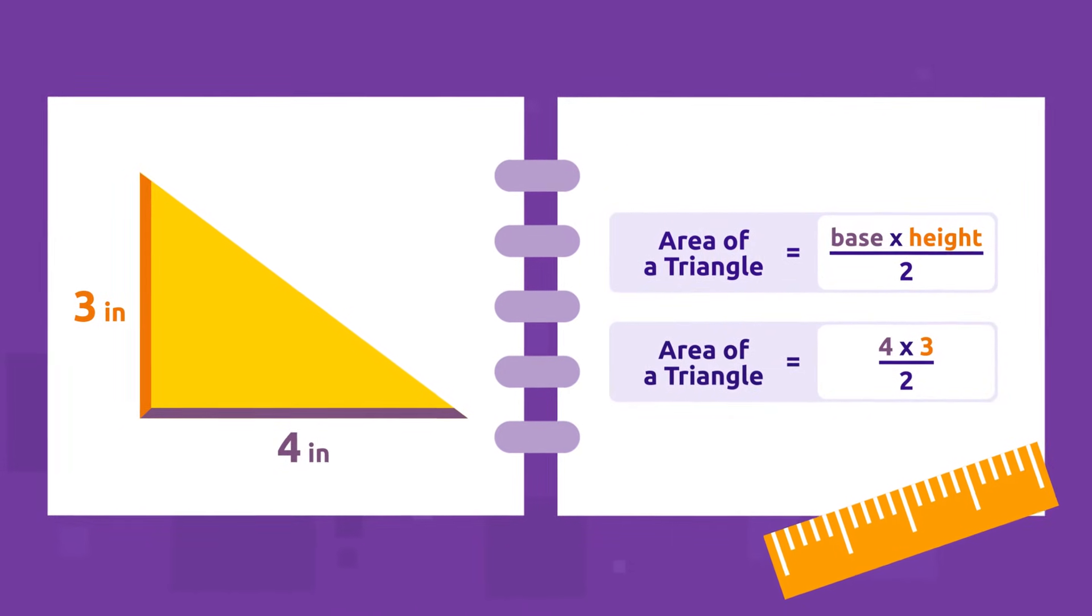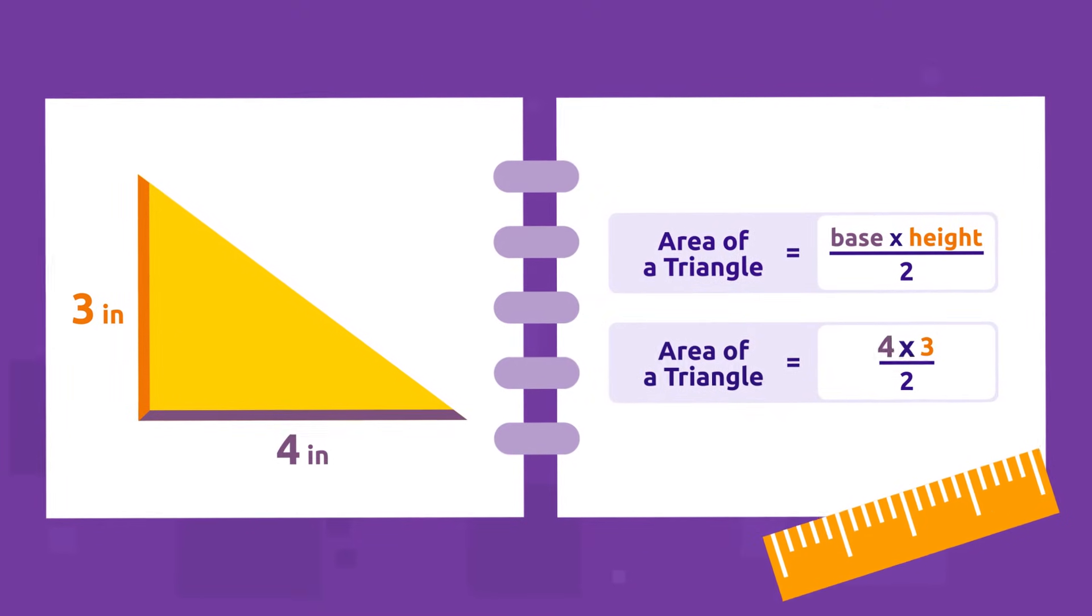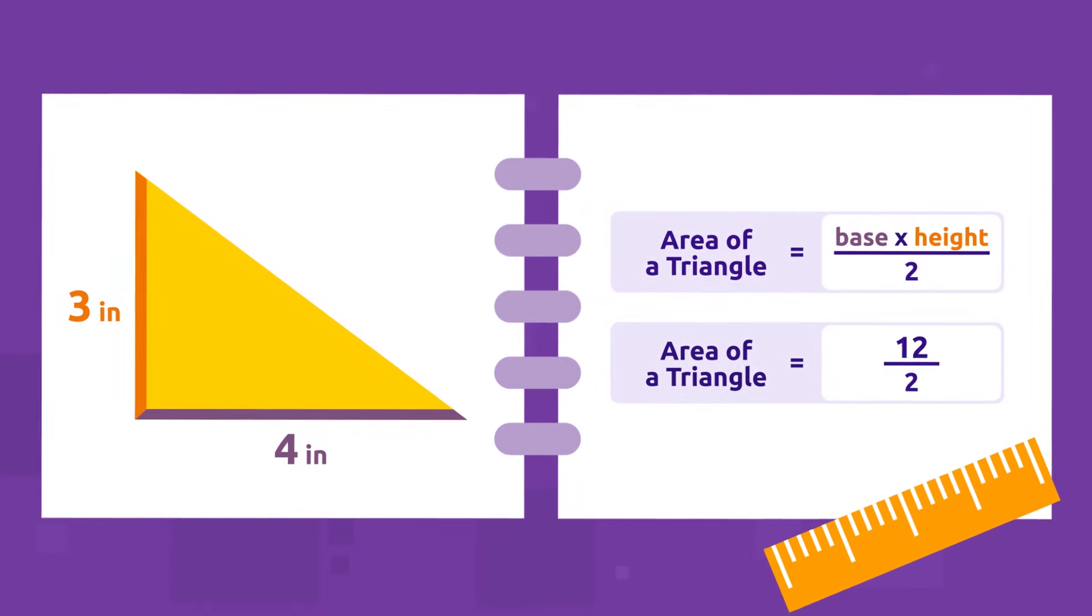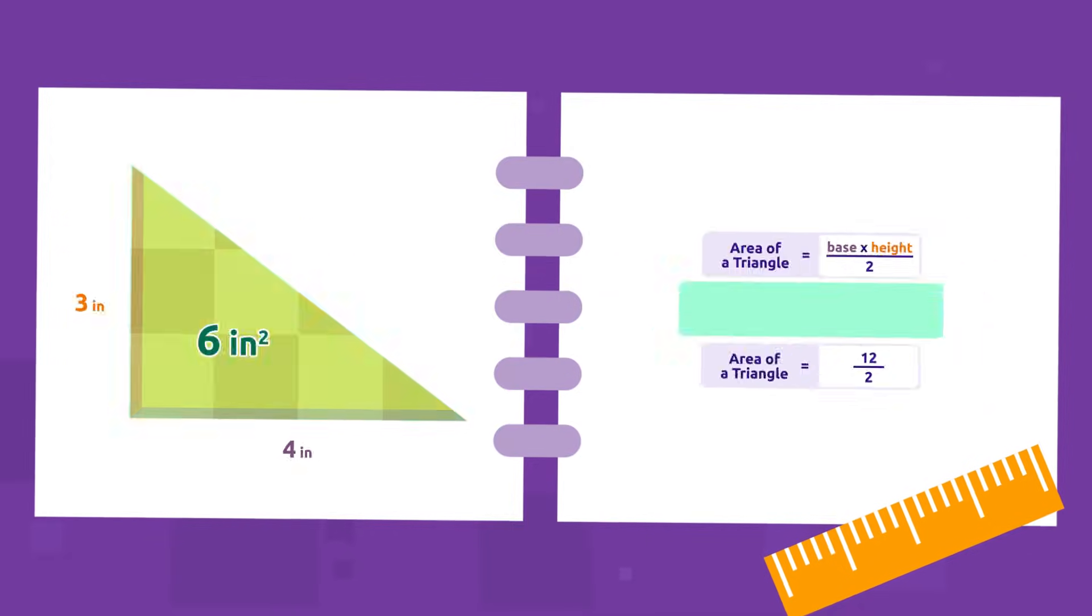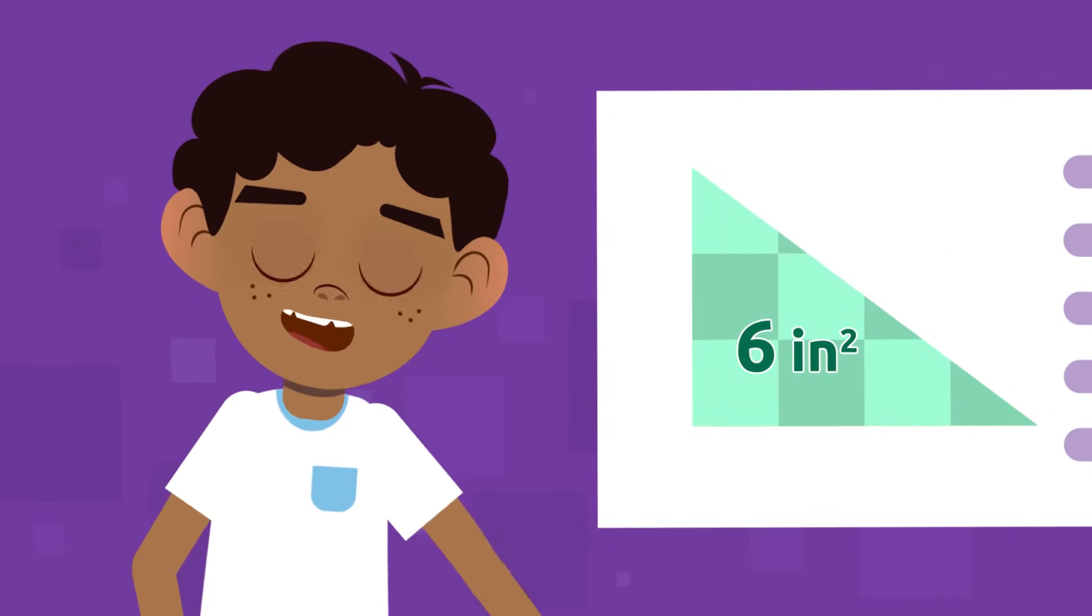That is, four times three equals twelve, and twelve divided by two equals six. Great! The area of this triangle is equal to six square inches.